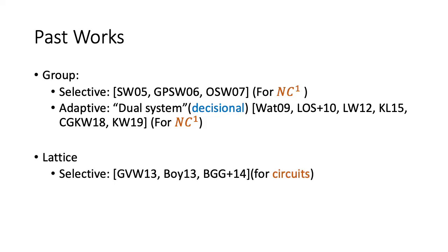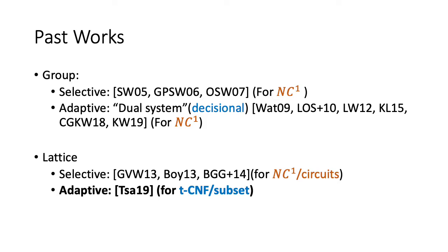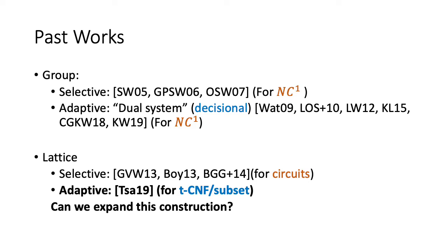Moving on to the lattice side: these works realize selective security from lattice for circuits. However, it was not until recent years that we finally know something of adaptive security from lattice. The Boneh et al. 2013 scheme actually had an attack last year, but we leave it here because it will be useful when we talk about our construction. The recent breakthrough was Sabari 2019, realizing adaptively secure ABE from lattice. Even though the functionality realizable is only a subset functionality, it is a step towards adaptive security and uses a different approach from all past approaches. We therefore ask: can we expand this approach to make that security hold for more general cases?